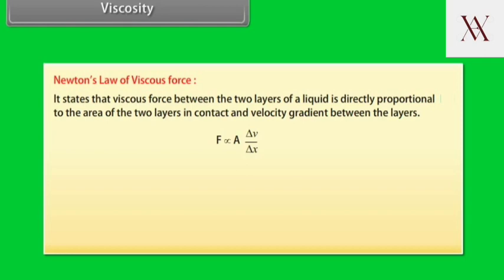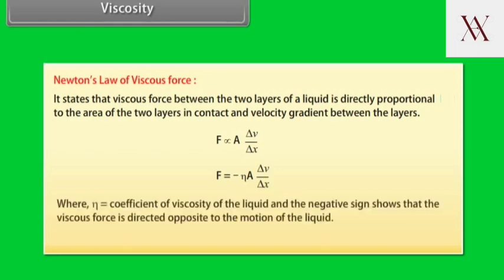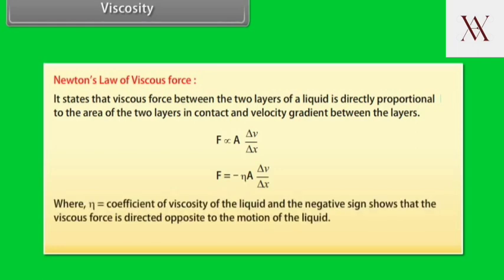F is directly proportional to A into delta V upon delta X. This equation can be written as F equals minus eta A into delta V upon delta X, where eta equals coefficient of viscosity of the liquid, and the negative sign shows that the viscous force is directed opposite to the motion of the liquid.